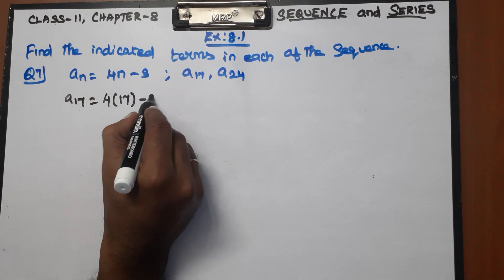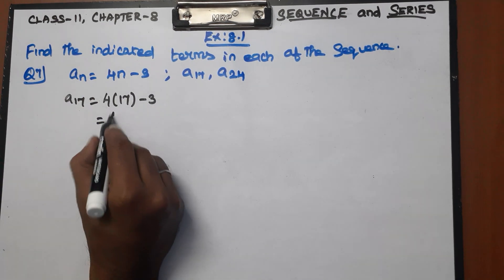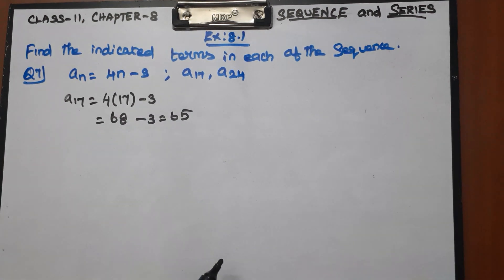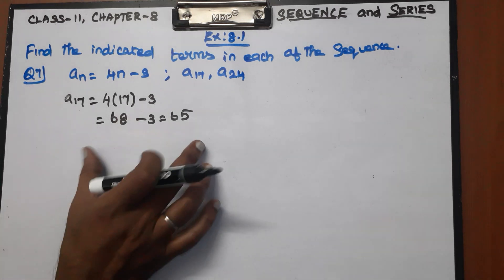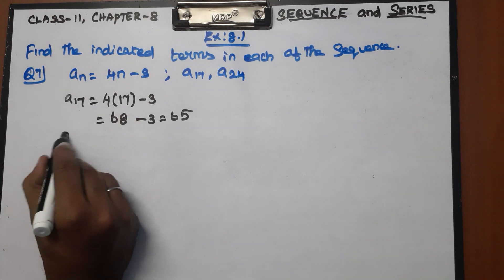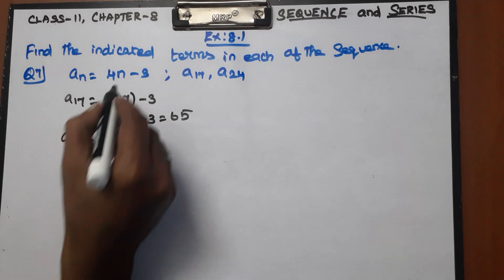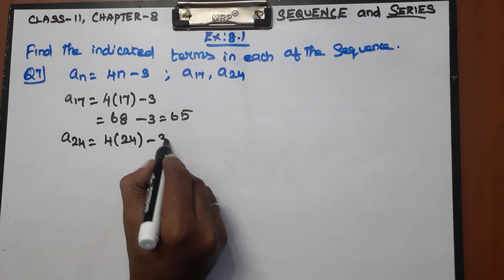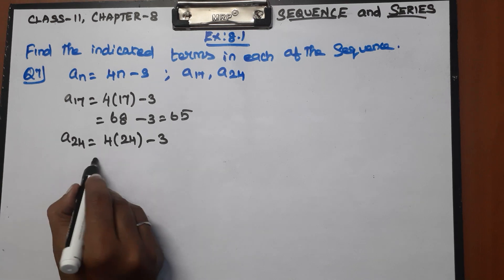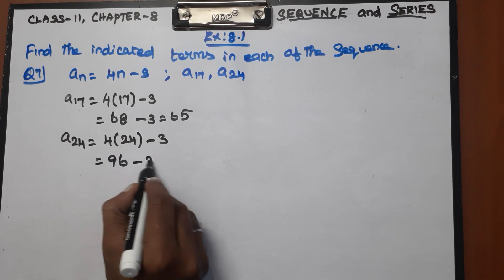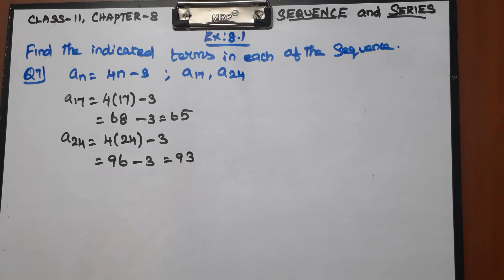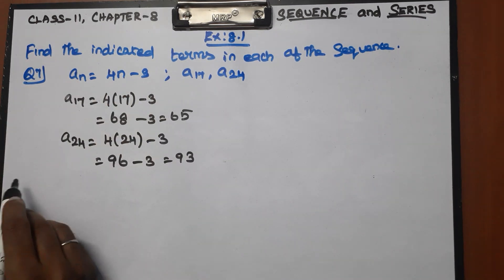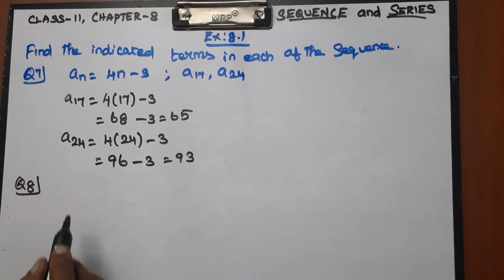4 into 17 equals 68, and 68 minus 3 equals 65. So a17 equals 65. Next, for a24, substitute n equal to 24: 4 into 24 equals 96, minus 3 equals 93. So a24 equals 93. This is the answer for Question Number 7.